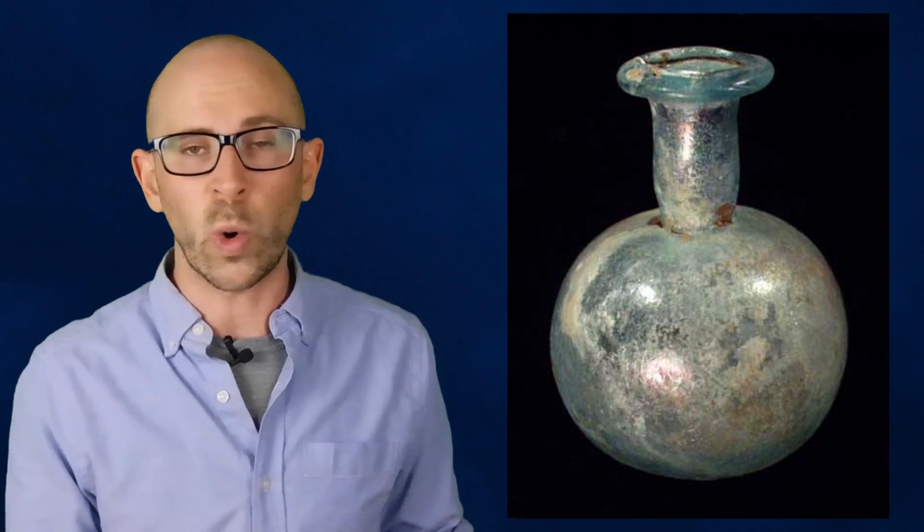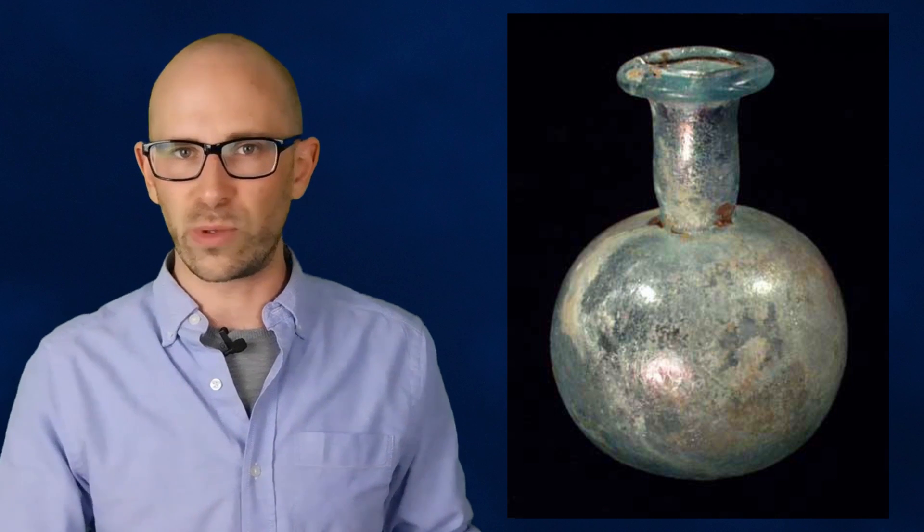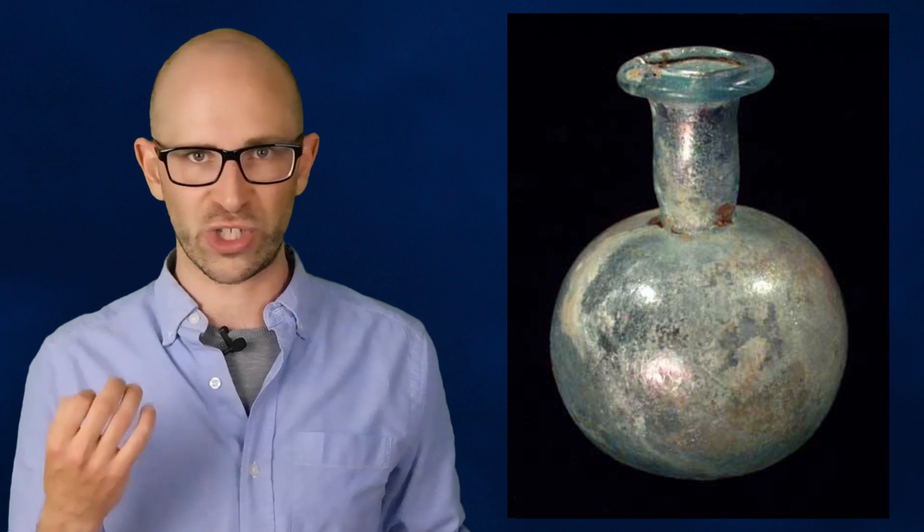The glassmaker took a glass vial and threw it on the ground, but instead of shattering like any other ordinary glass vial should, it bent slightly at the point of impact. With the use of a small hammer, the glassmaker was then able to restore the bottle to its original shape.